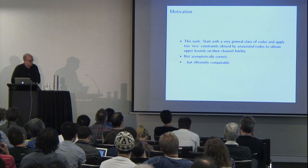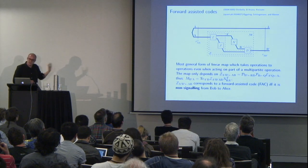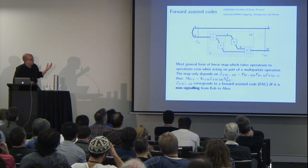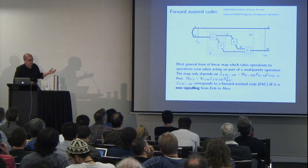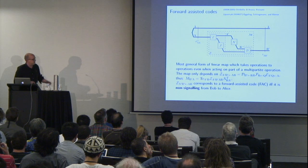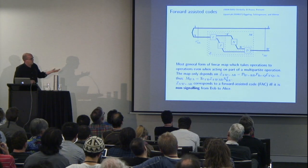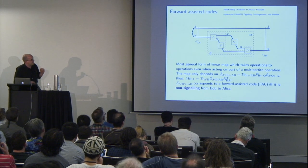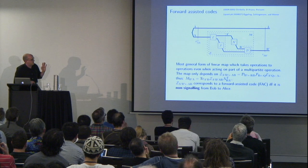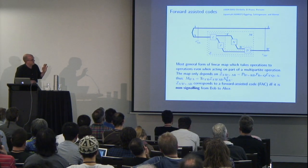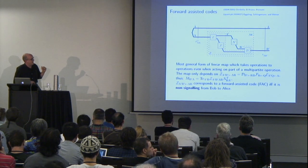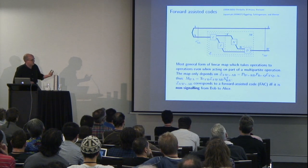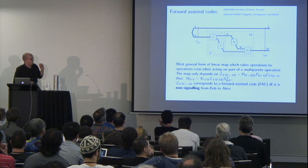They also turn out to have some quite interesting properties. The really big class of codes I referred to are called forward-assisted codes — this is quite powerful in that we allow the encoder and decoder to have any kind of extra forward quantum communication they like. Not very interesting from the point of view of performance since they can always do arbitrarily well, but they're a natural starting point. A code here is a linear map from the noisy channel we're using to this overall operation N, and this is the most general form of linear map taking CPTP maps to operations, even when acting on just part of a multipartite operation.